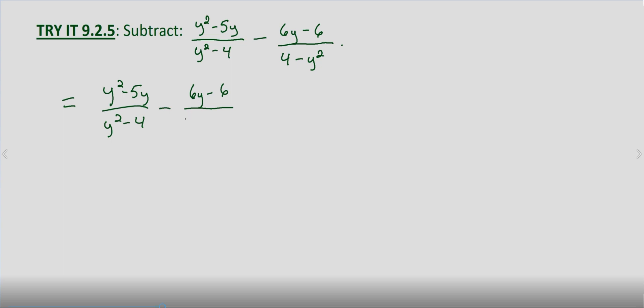And I'm just going to factor out a negative one from the denominator. So this is negative one times y squared minus four.